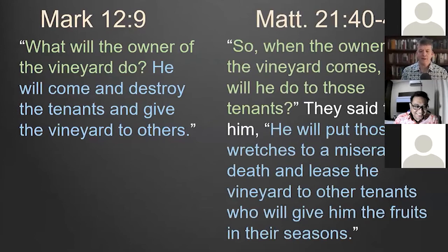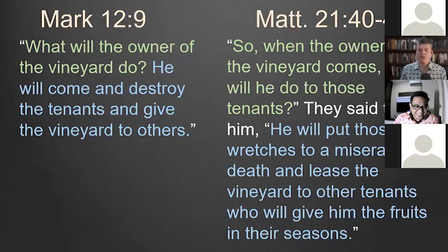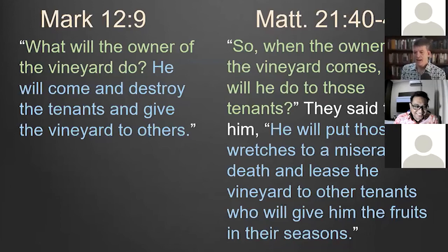After the wicked farmers kill the son, in Mark's gospel Jesus asks and answers his own question: 'What will the owner of the vineyard do? He will come and destroy the tenants and give the vineyard to others.' Matthew turns that into a short dialogue — something Matthew does on more than one occasion. Jesus asks: 'So when the owner of the vineyard comes, what will he do to those tenants?' Matthew has also paraphrased Jesus' question by addition, expanding it. Then the Jewish leaders answer: 'He will put those wretches to a miserable death and lease the vineyard to other tenants who will give him the fruit in their seasons.' Matthew has changed a statement into a dialogue and paraphrased by addition.